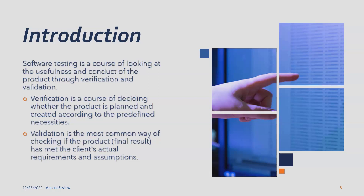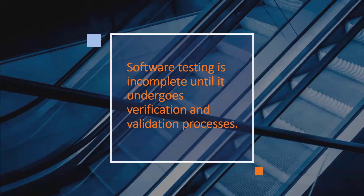Verification checks whether whatever functionalities the user is looking for are implemented or not. Validation is the most common way of checking if the product or final result has met the actual requirements and assumptions. As mentioned in the BRD document, it always specifies the expected result of any functionality, and whenever validation is performed, it is always calculated with the final result.